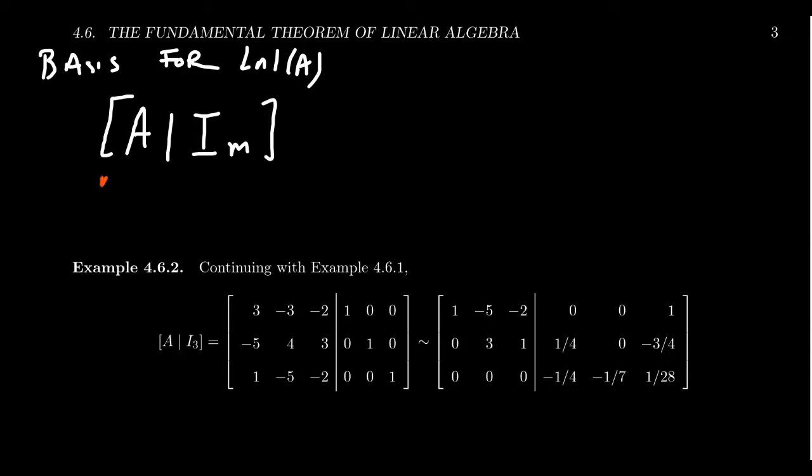So if A is M by N, then you have to augment the M by M identity matrix. And then row reduce this matrix to the RREF. Honestly, any echelon form would work here, but we'll take the RREF of U.